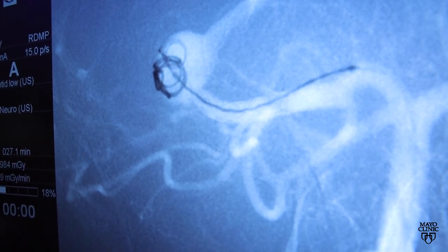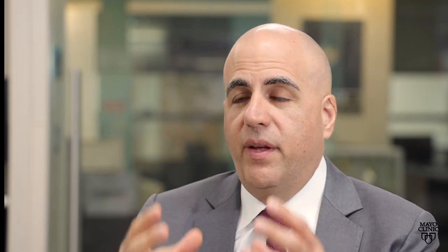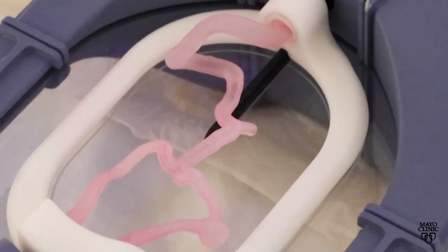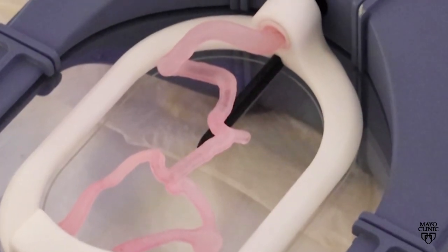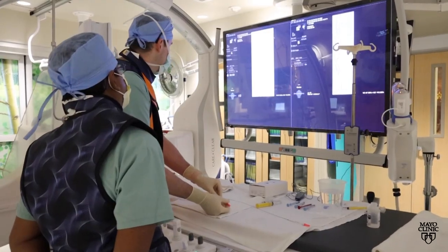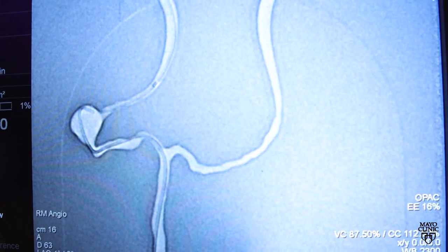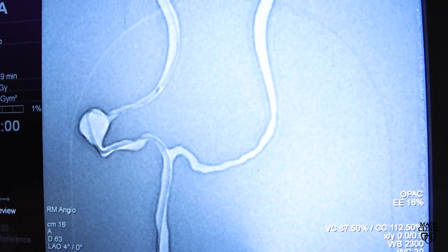If we want to replicate the vessels, we can cast that model with materials that replicate the vessels. We can take that cast, that vessel, and then take it to the procedure room and put our catheters into it, and it's very much similar to putting it into human vessels.